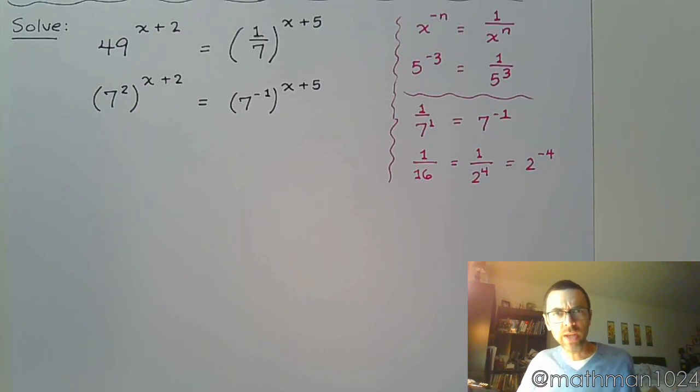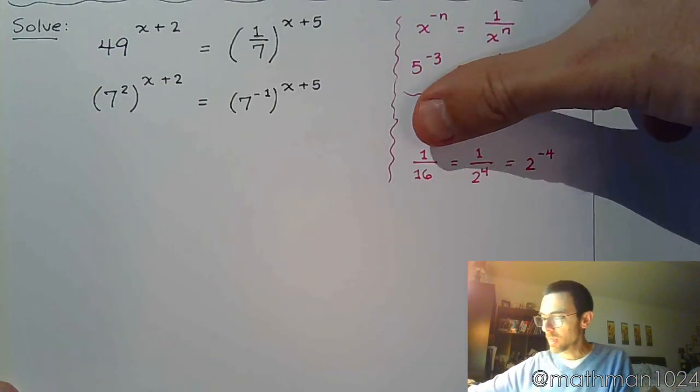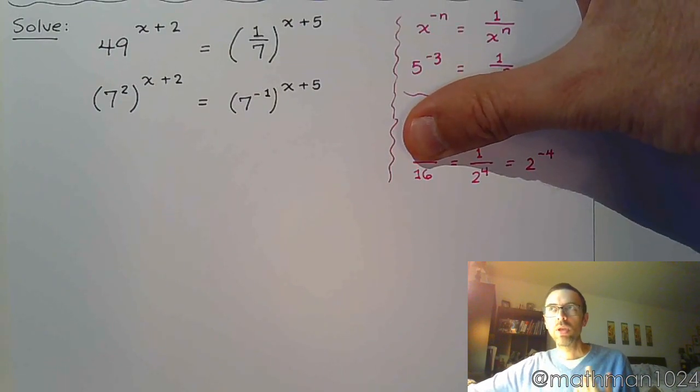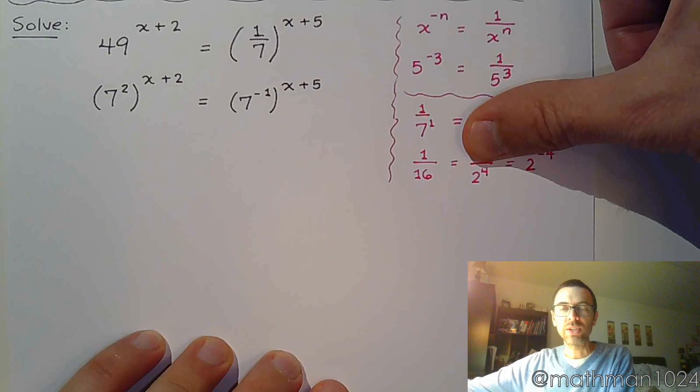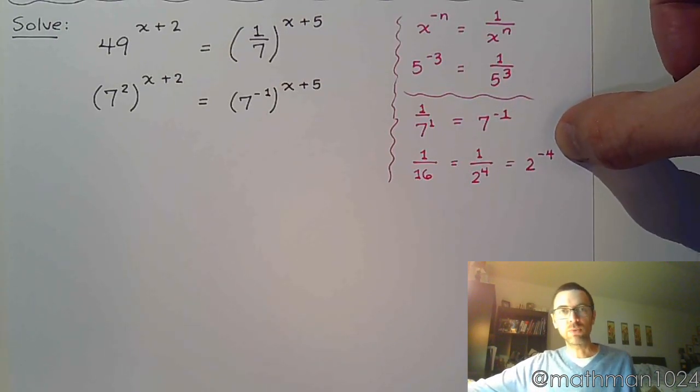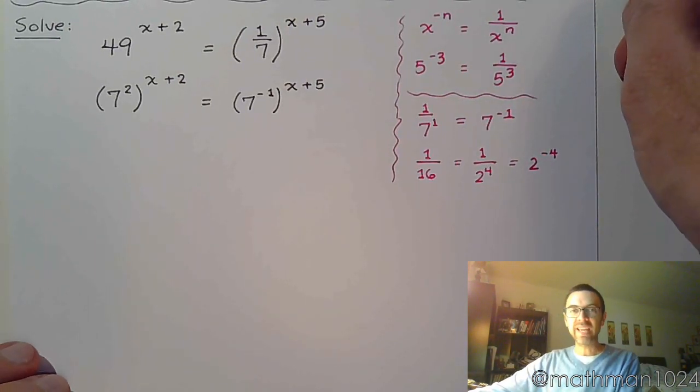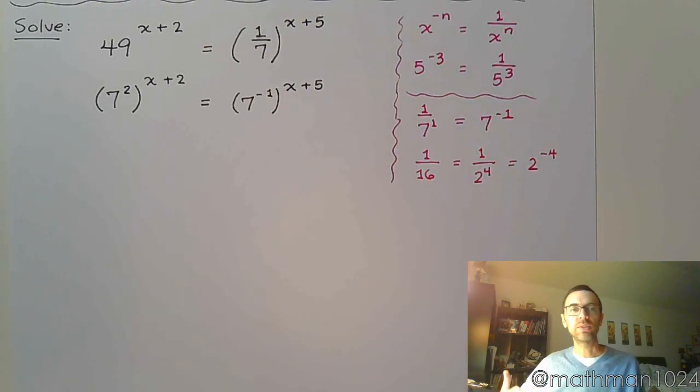So kind of a more shortcut way, as long as you know your powers, you could do this. All right. 16 is based off of 2, and it's 2 to the 4th. But since it's in the denominator, it's 2 to the negative 4th. Right? Because it's the negative power that causes it to be in the denominator.